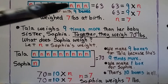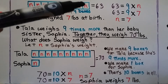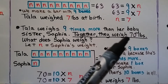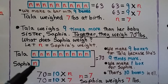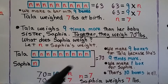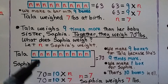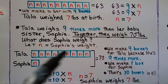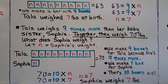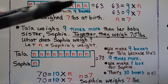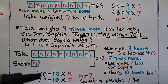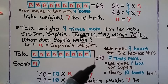When we were just finding how many nines were in 63, we had one bar. But when together they weigh 70 pounds, we now have Sophia as another bar, and because together they weigh 70 pounds, we have nine boxes for 'nine times more' plus one more for Sophia's box n. When comparing with multiplication and two people, we have a bar for each person and together they equal whatever the combined total is.